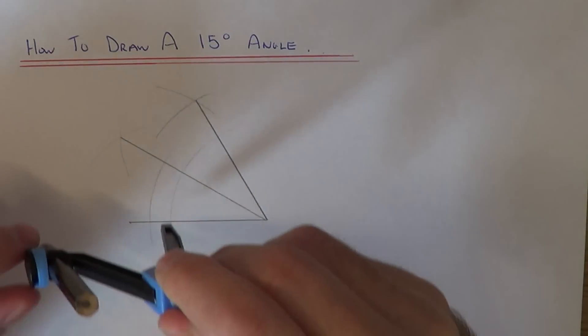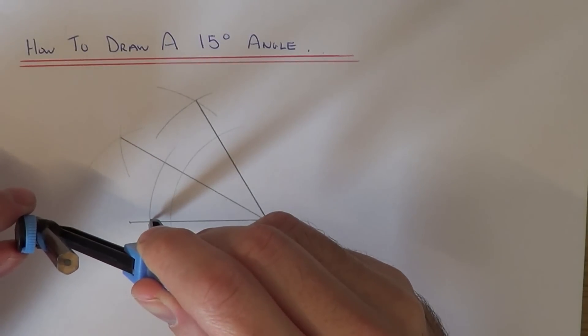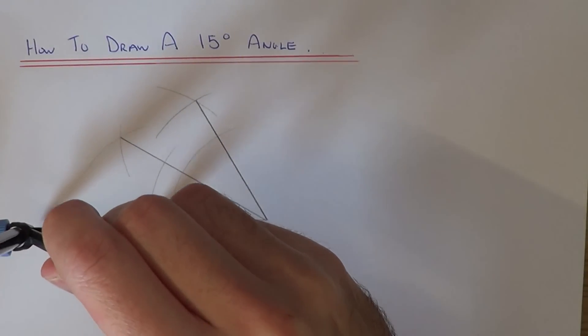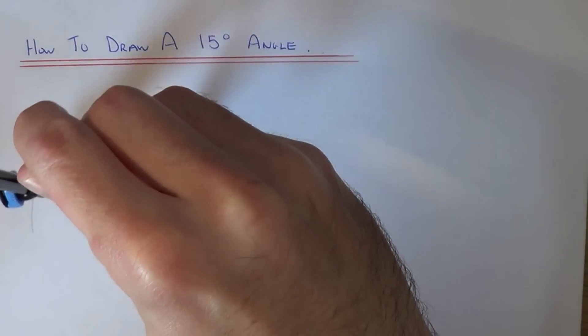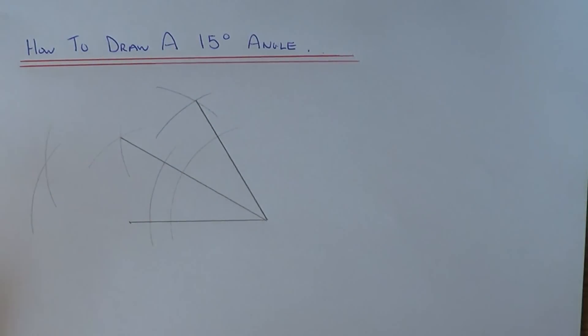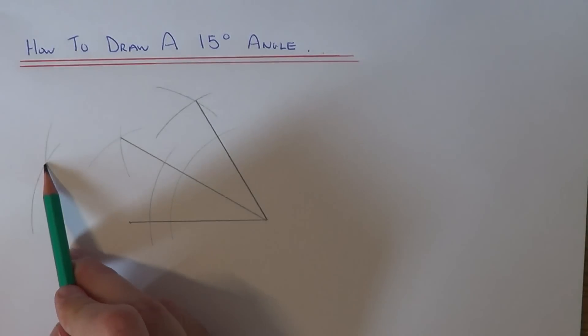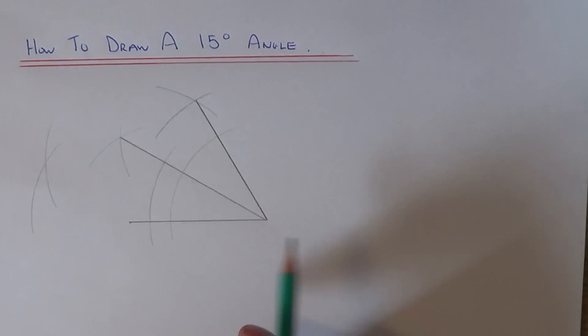Do two more arcs from these two intersection points. Then join this intersection here back to the end of the line.